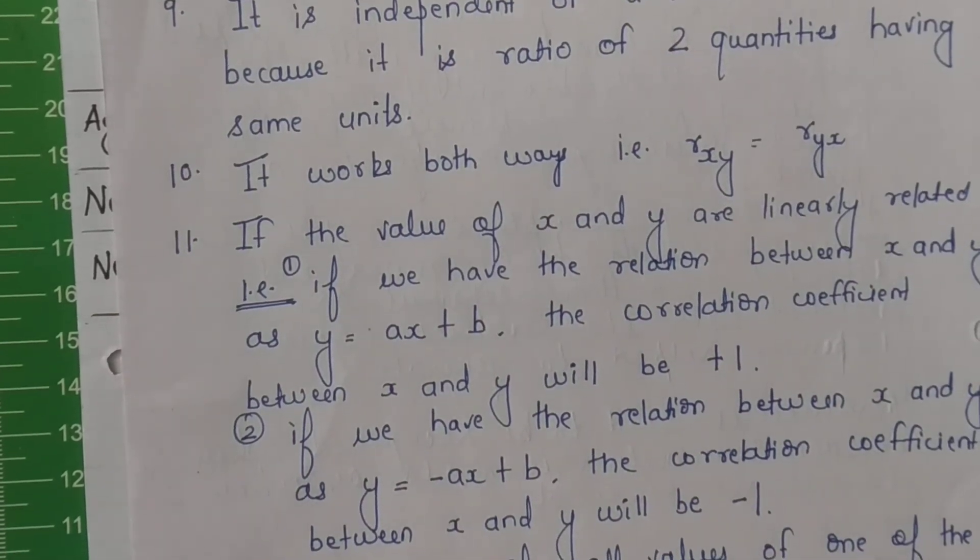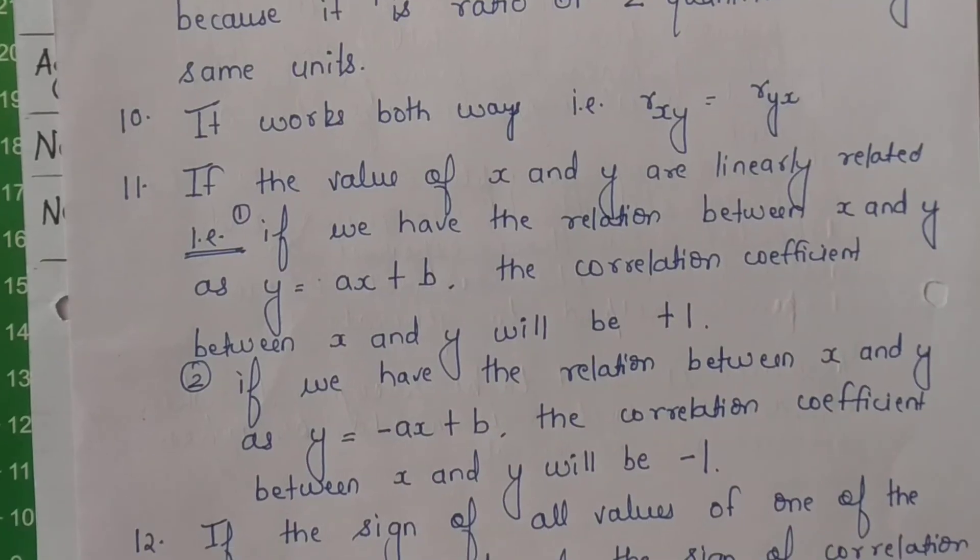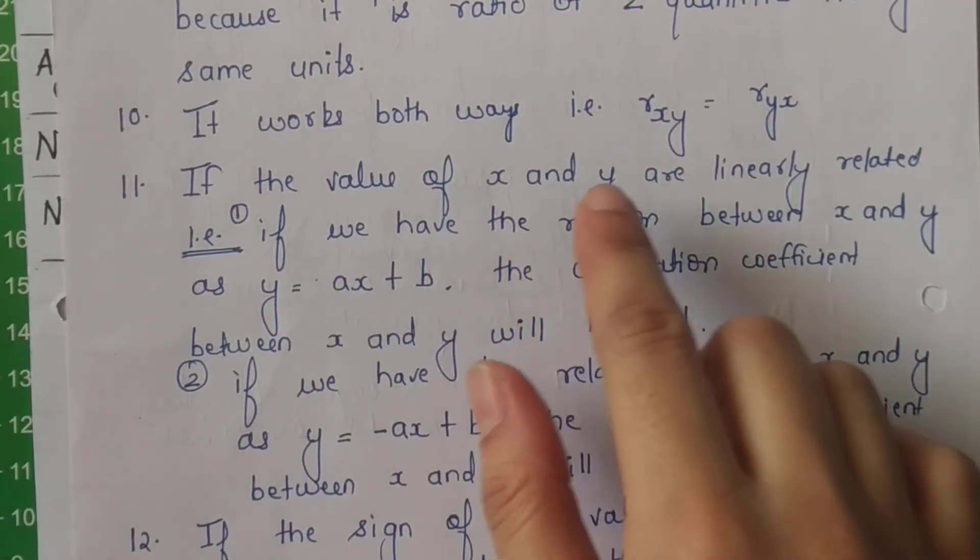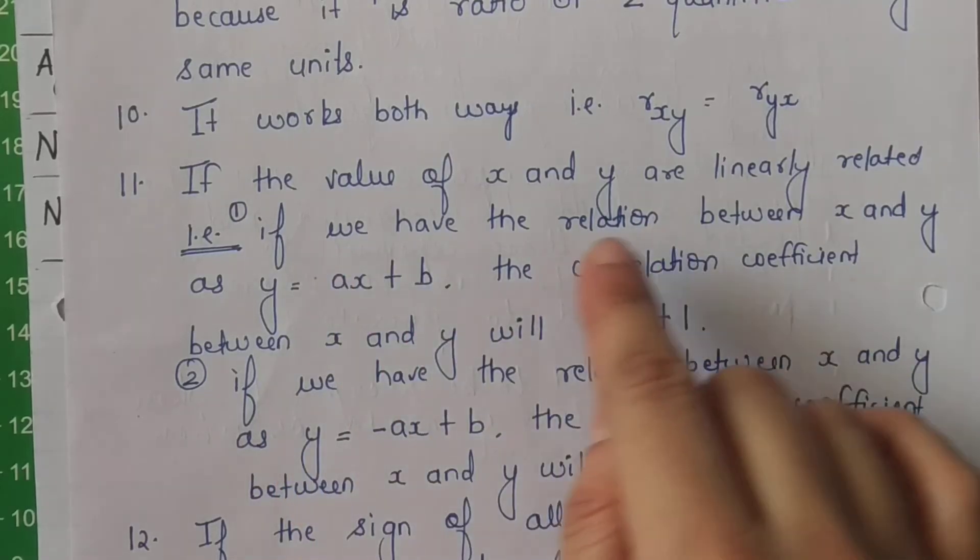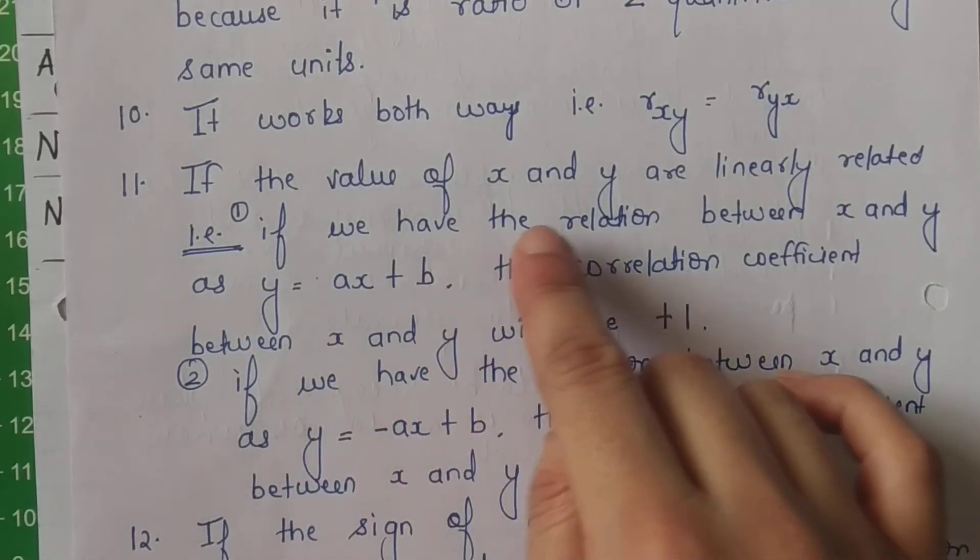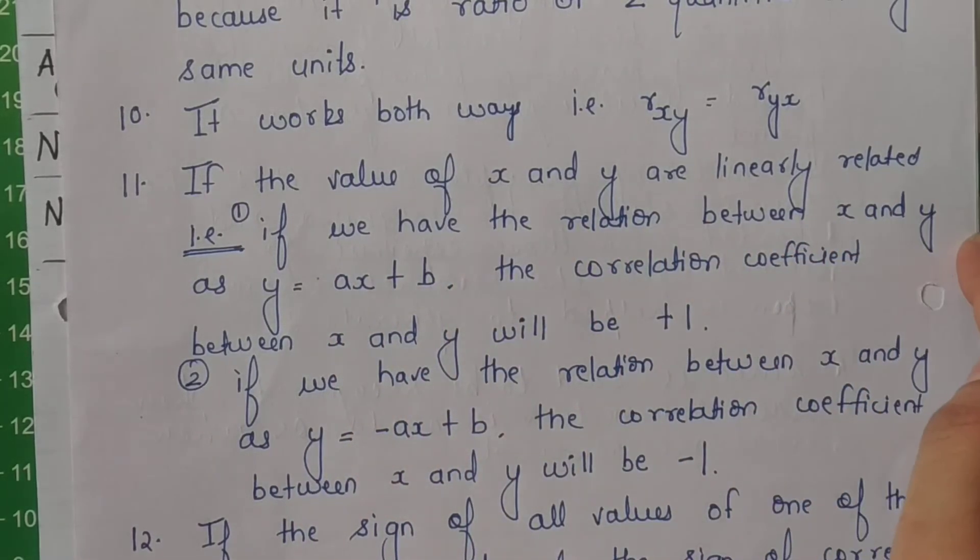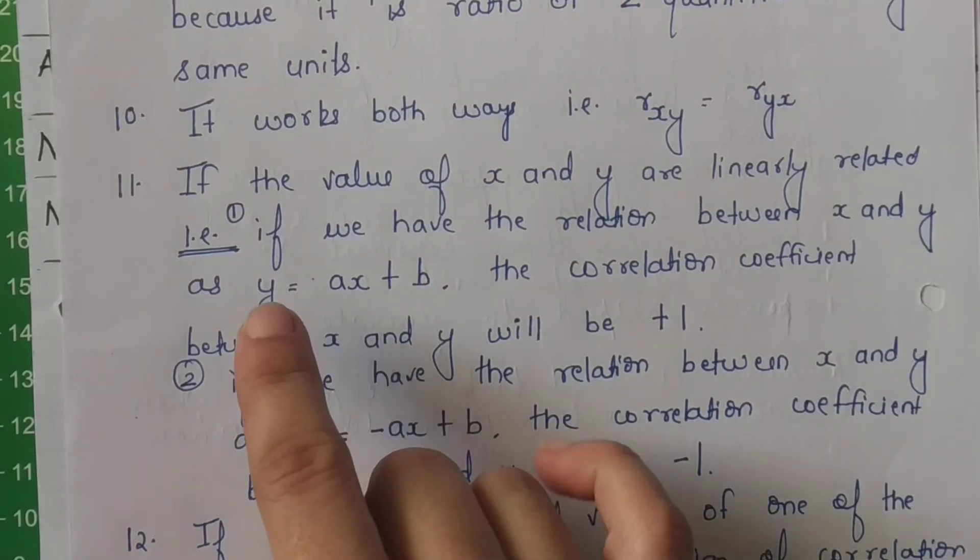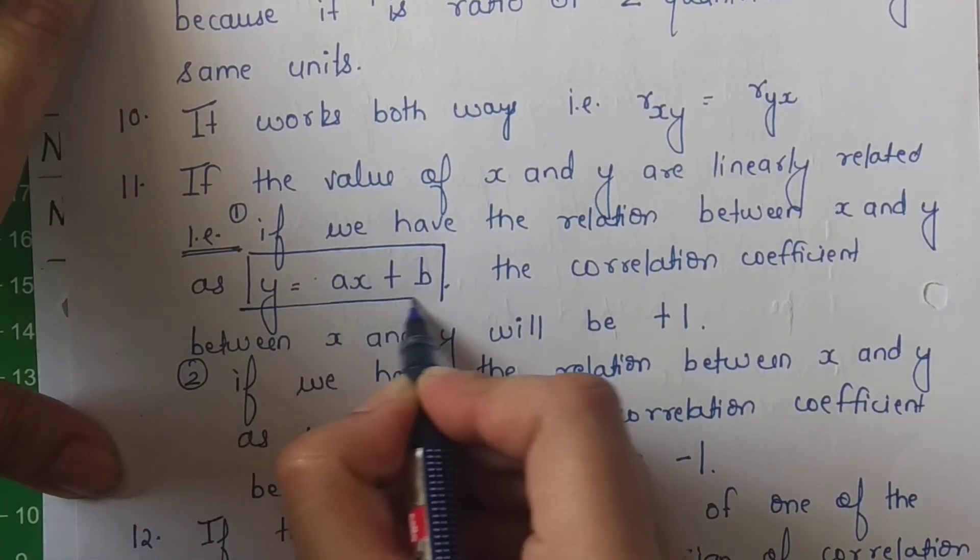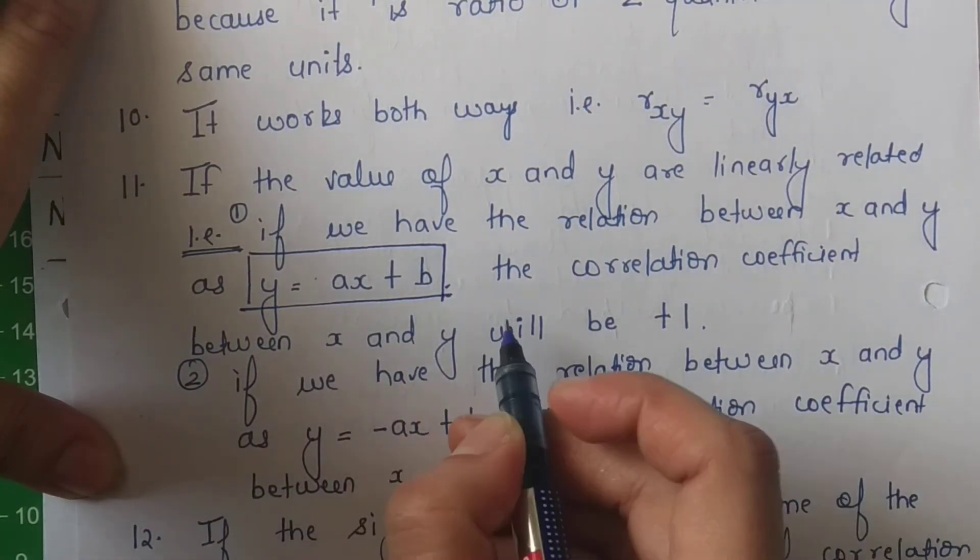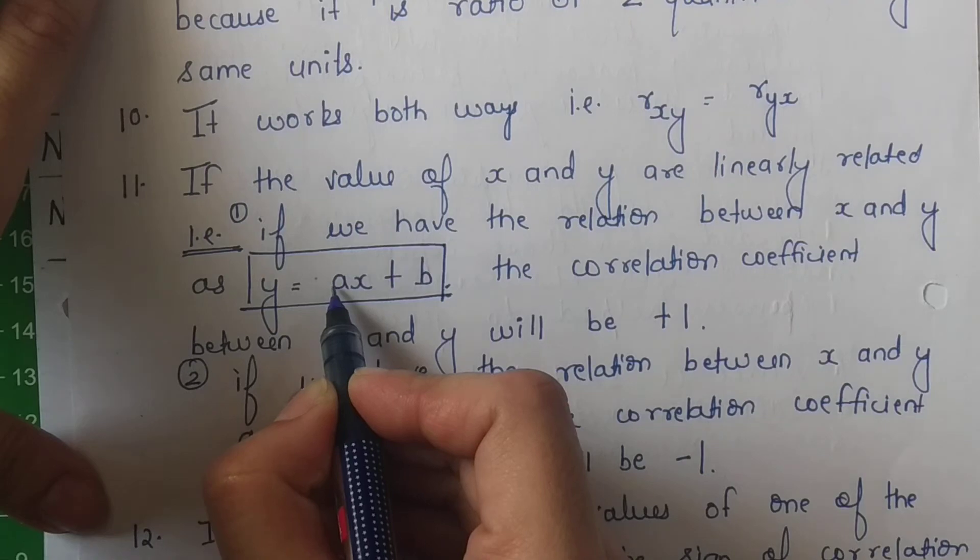Baat karte hain eleventh property ki. If the value of x and y are linearly related, agar in dono ke beech ka rishta linearly relationship hai, uske case mein hum isse aise bhi express kar sakte hain. If we have the relationship between x and y, toh hum usse express kar sakte hain: y is equal to ax plus b. Then the correlation coefficient between x and y will be positive 1, jo ki hai positive a, so we get positive 1.